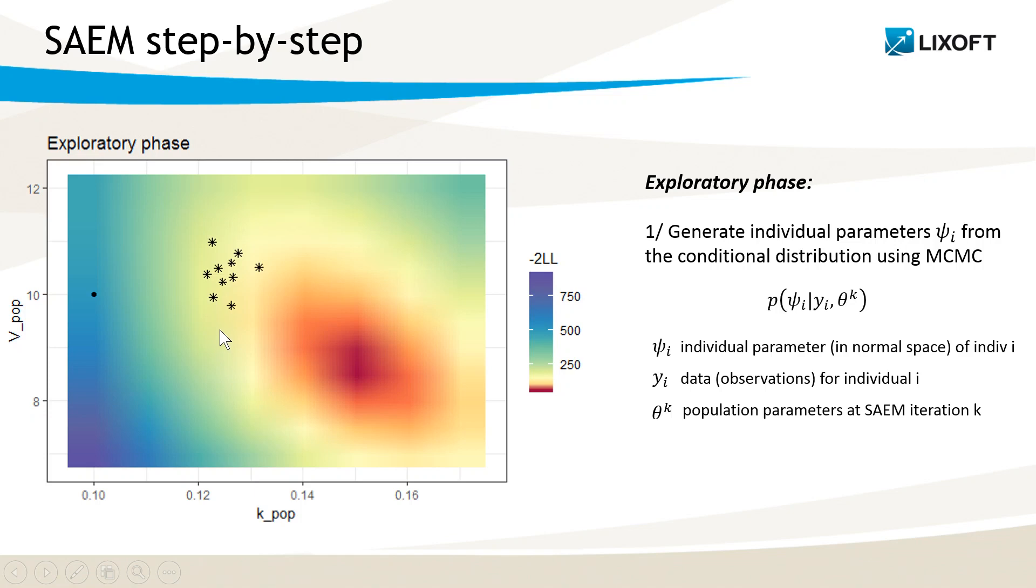If I have 10 individuals in my dataset, it would be those 10 stars here, for instance. As you can see, the conditional distribution takes into account the population parameters at the previous iteration, so in my case the starting point, but also the data. And this will help to pull the individual parameters closer to the maximum likelihood compared to the population parameters.